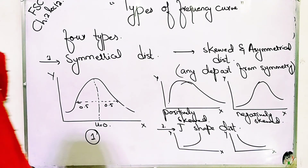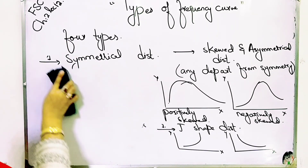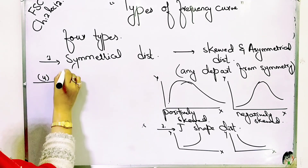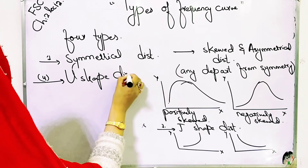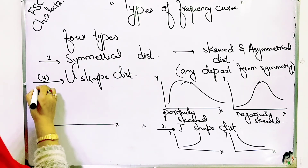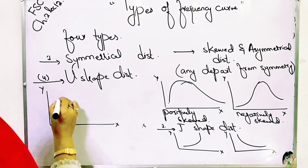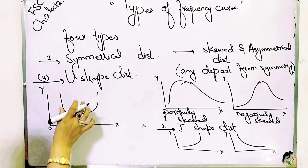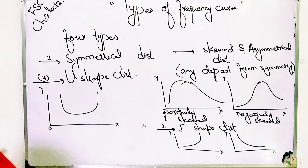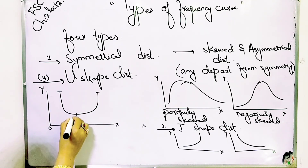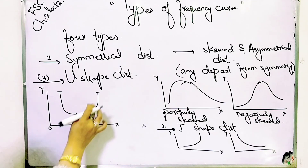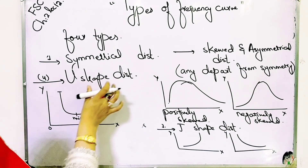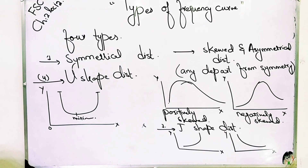The fourth type is the U-shape distribution. As the shape of the letter U, you have values and frequencies plotted in a U shape. In such a frequency distribution, the maximum frequency occurs at both ends of the range and the minimum towards the center — maximum from both sides but minimum at the center — making the U-shape distribution.